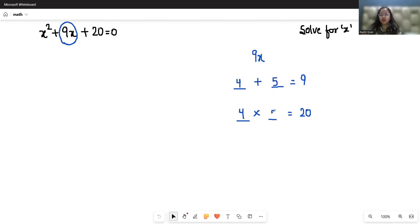We can write this middle term 9x as 4x plus 5x plus 20 equals 0. Now from the first two terms, if I take x as common, what is left is x plus 4. From the next two terms, if I take 5 as common, x plus 4 equals 0. Now x plus 4 is the common bracket, so what is left is x plus 5 equals 0.